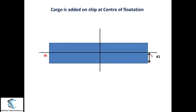We will now see three different conditions related to cargo operations on the ship. The first condition is cargo added at the center of flotation location. The second condition is cargo already on board being shifted to any position on deck. The third condition is cargo added and then shifted to any position. After all three operations, we need to find the new draft and the change in trim.